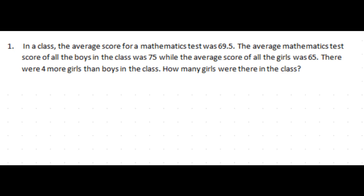Hello kids, let's now look at a question from one of our subscribers. It is on average and total. In a class, the average score for a mathematics test was 69.5. The average mathematics test score of all the boys in the class was 75 while the average score of all the girls was 65. There were four more girls than boys in the class. How many girls were there in the class?